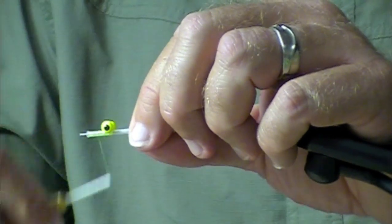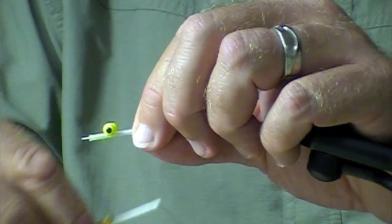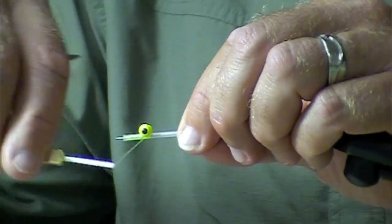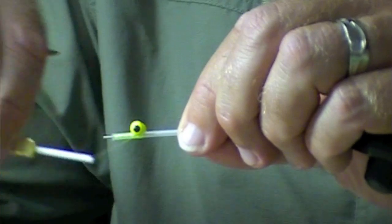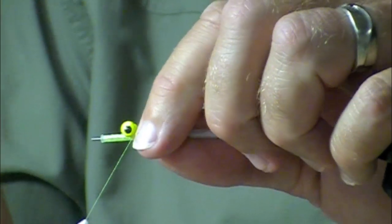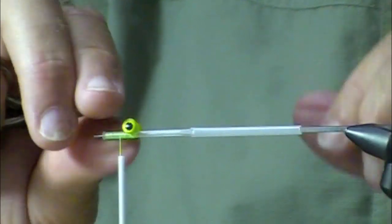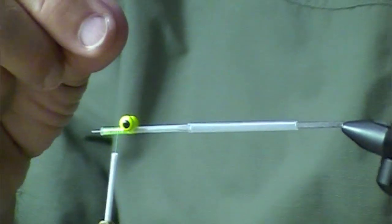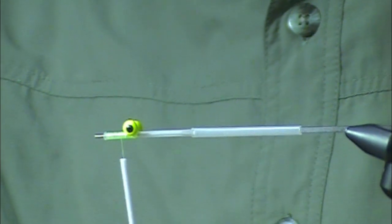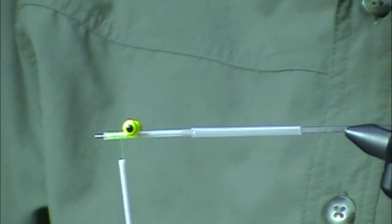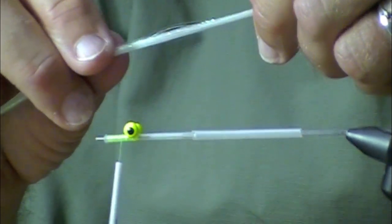Now if you're going to use five minute epoxy, which is awesome, it becomes less important to flare that end. Here we have our barbell eye with a little drop of normal cement. This is DNA fusion for the belly - you can use wide bucktail also.